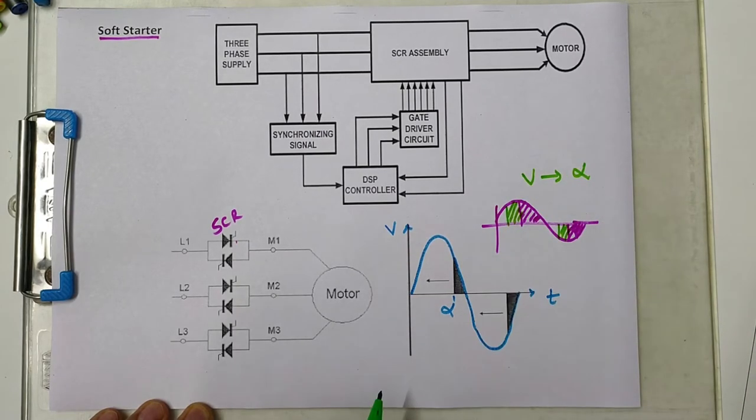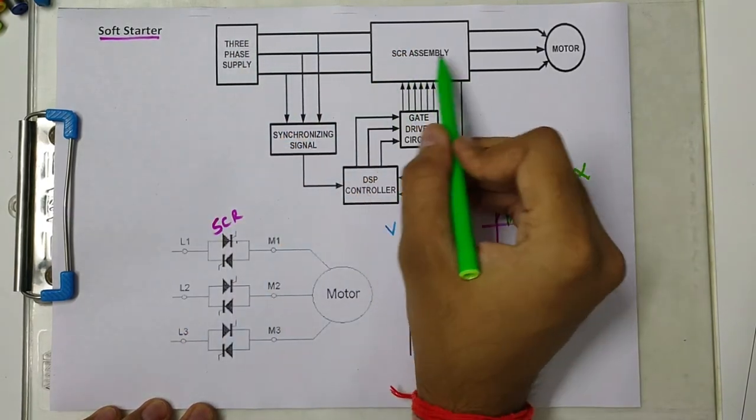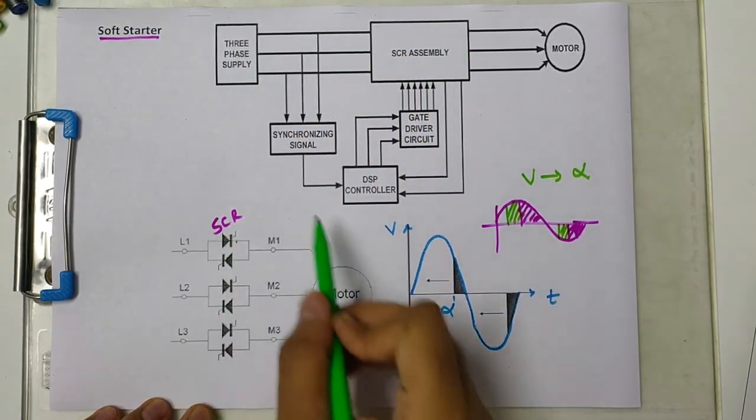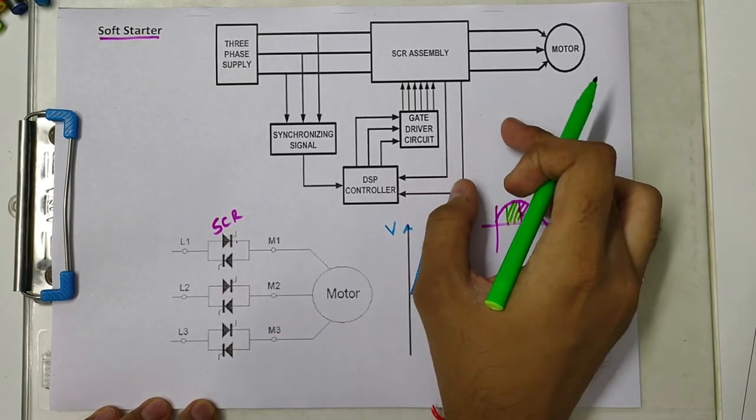The three-phase supply is given to this SCR assembly as shown here. This is the basic schematic, which includes several important points. The SCR assembly gives power to the motor, and this is the control circuit of the power circuit.